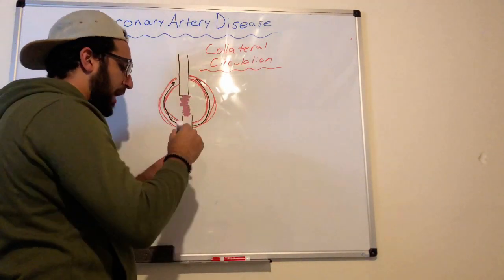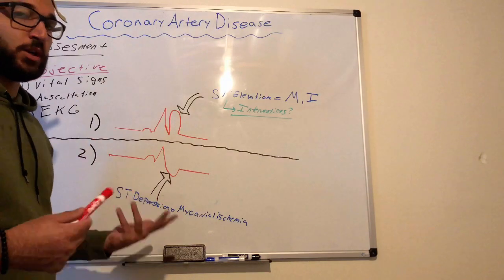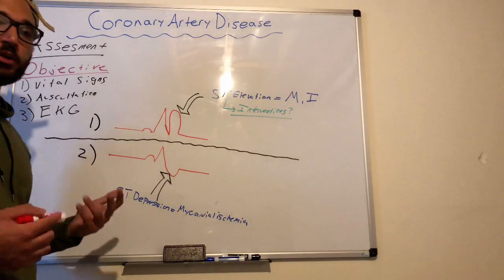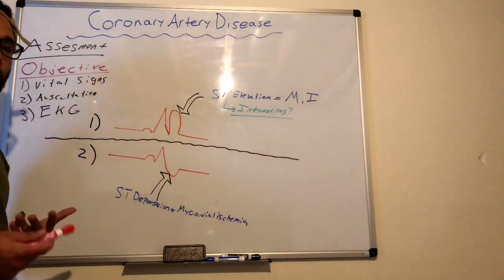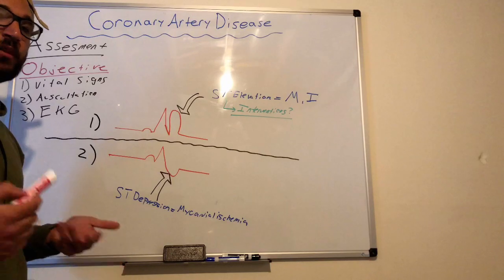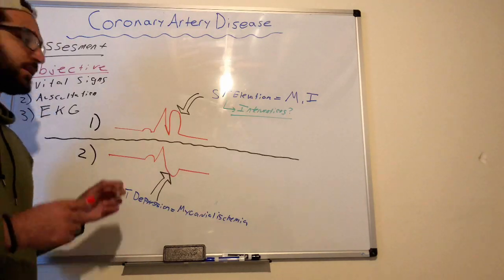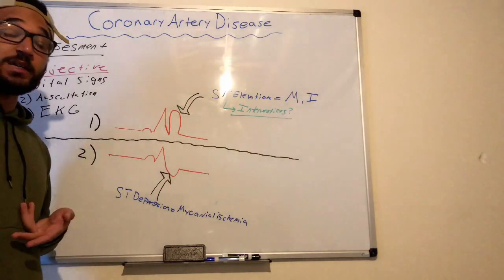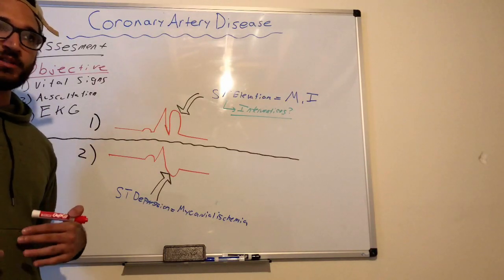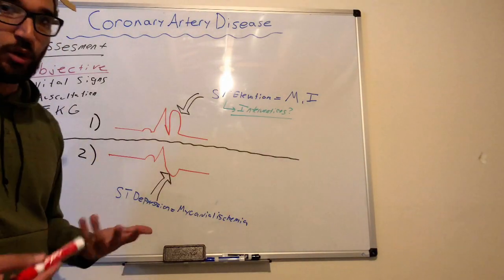For nursing assessments for a patient with coronary artery disease, you want to do objective assessments. Check their vital signs — what's their blood pressure, their heart rate? Are they receiving enough oxygen? Is their O2 above 95%? Another important intervention is putting a 12-lead EKG on the patient, which gives a better visualization of the heart rhythm to determine what's actually going on within the coronary arteries.